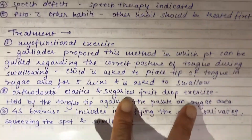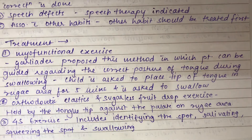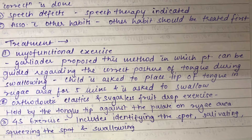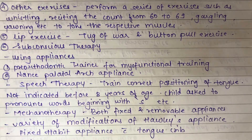The 4S exercise includes: identifying the spot, salivating, squeezing the spot, and swallowing. Using the tongue, the spot is identified, the tongue tip is pressed against the spot, and the child is asked to swallow while keeping the tongue at that same spot.